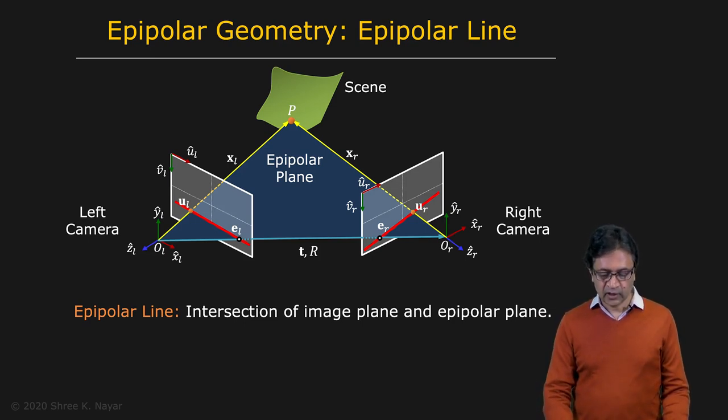So here you have your epipolar plane. We know what the epipolar plane is. It is unique for any given point P. It includes the point P and the epipoles, and it also includes the centers of the two cameras right here. So that's your epipolar plane.